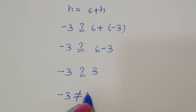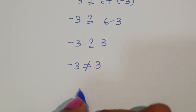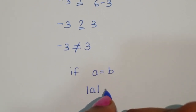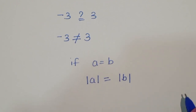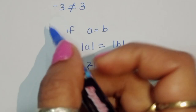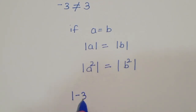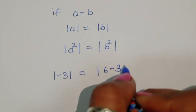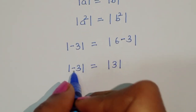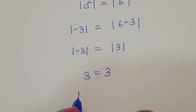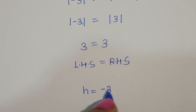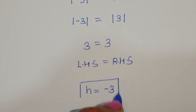Minus 3 is not equal to 3. But we know that if a equals b, then the absolute value of a equals the absolute value of b. Using this, the absolute value of minus 3 equals the absolute value of √(6 minus 3), which is 3 equals 3. So LHS equals RHS, and h equals minus 3 is correct when we take the absolute value. This is the solution.